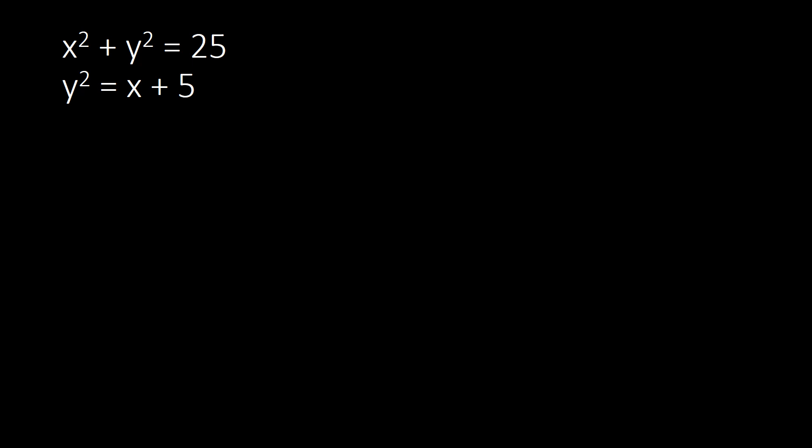Solving for the system, we can use the elimination method by eliminating a variable with the same exponent. We will rearrange the equations, lining up terms with the same variable and the same exponent. So we can place x squared here, and then copy equation 1: x squared plus y squared equal to 25.